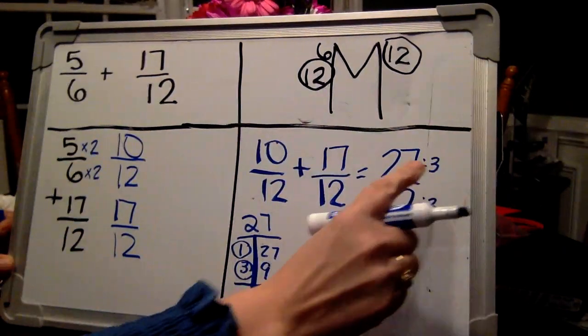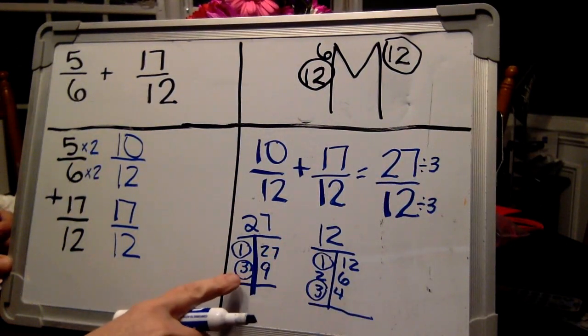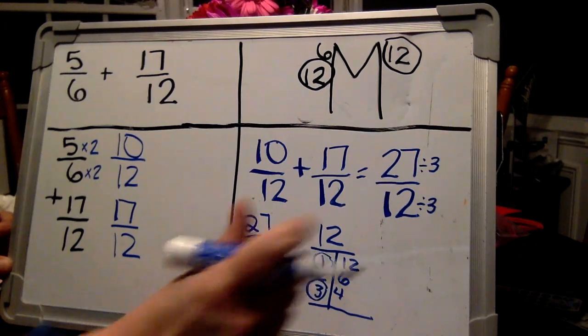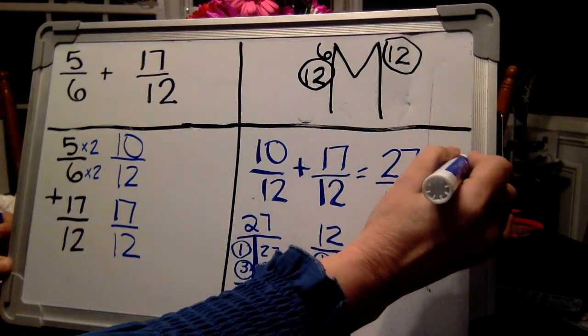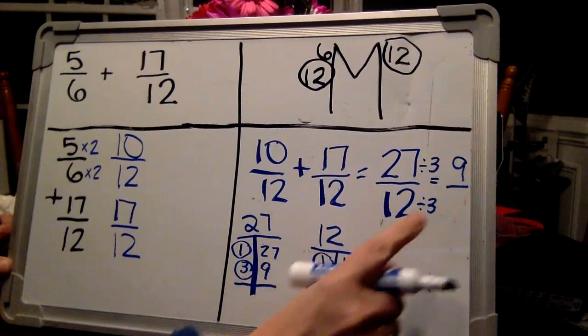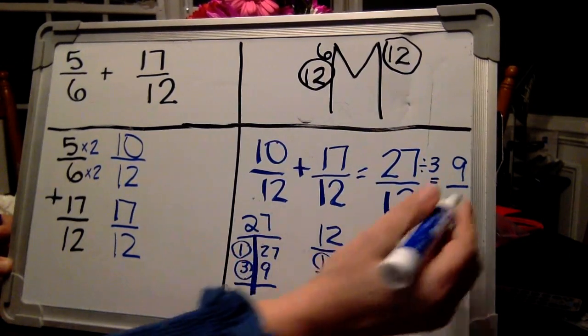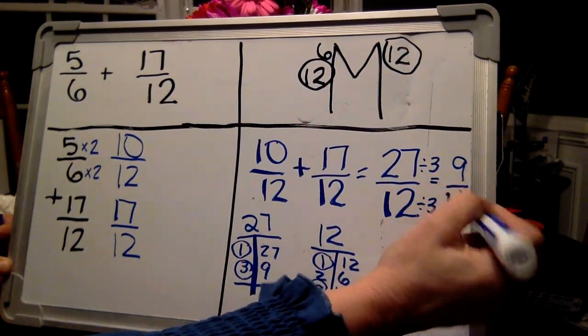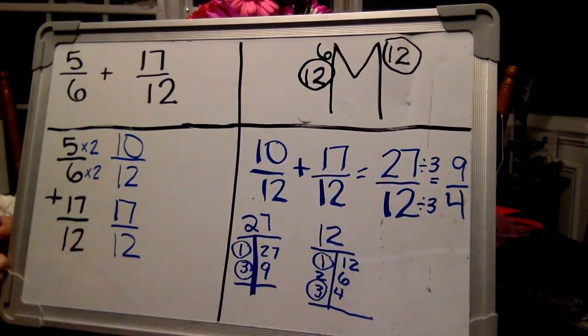So use your t-chart. How many 3's did it take to make a 27? 9. And how many 3's did it take to make a 12? 4. So now we have 9 fourths, but we can't leave it like a bobblehead or an improper fraction. We need to turn it into a mixed number.